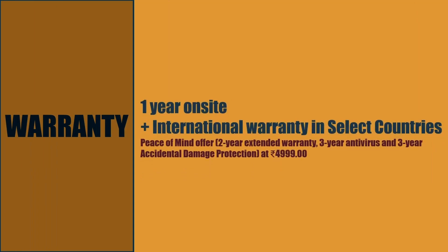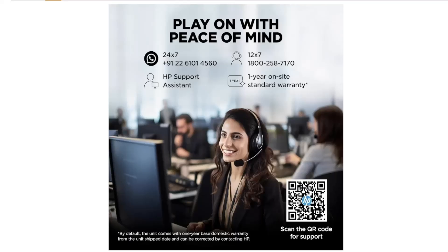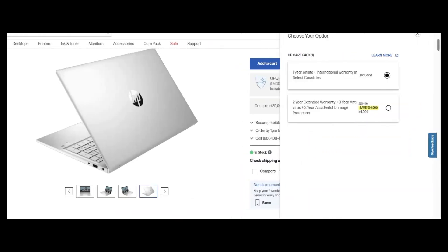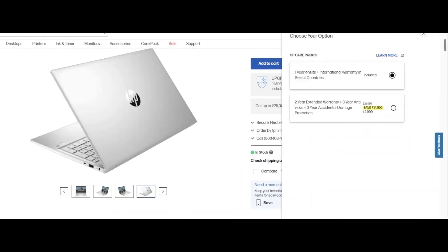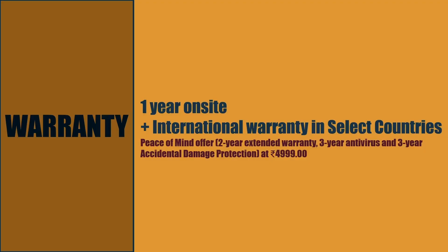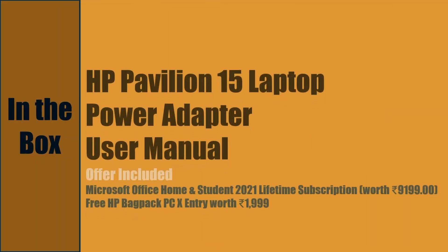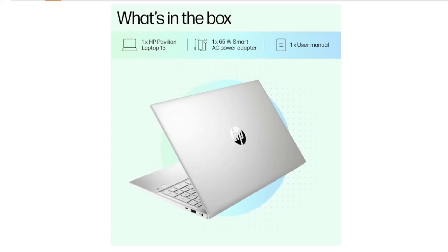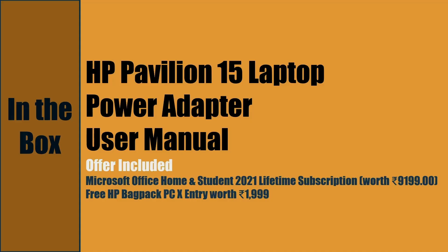For warranty, we get 1-year on-site warranty and international warranty for selected countries. Register for the Peace of Mind warranty package to get extended warranty. What's in the box: the HP Pavilion 15 laptop, power adapter, user manual, bundled software package, and operating system.